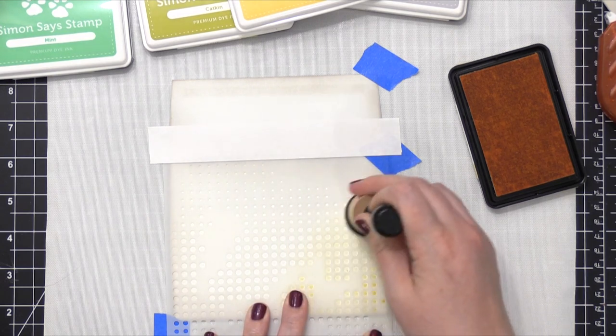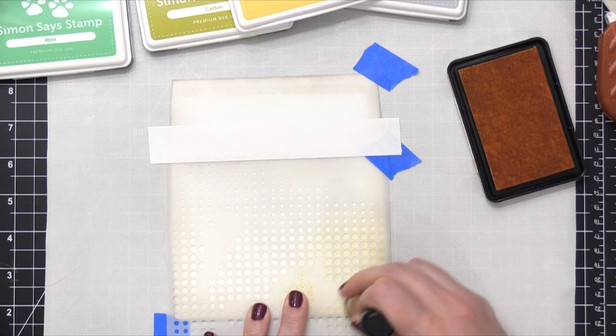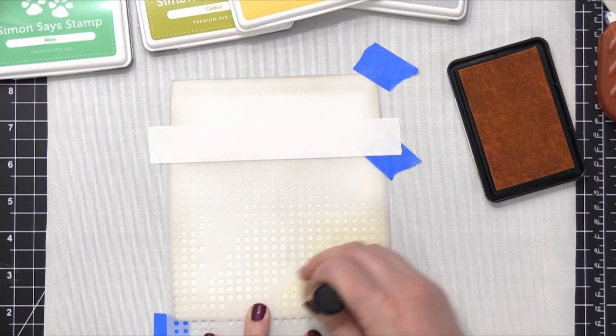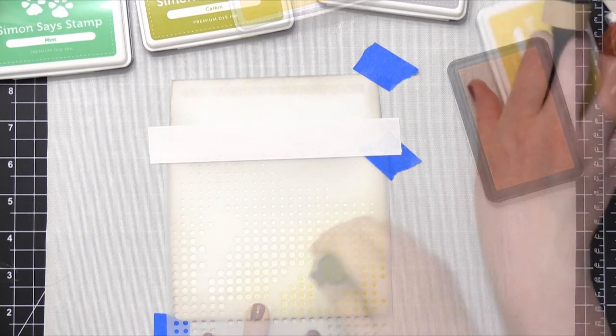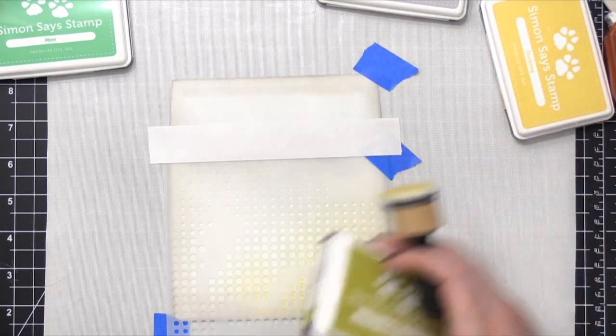You'll notice that in this Tap Dance stencil, there's a blank area up in the top corner. And I thought that was the perfect opportunity for where the postage stamps will go.